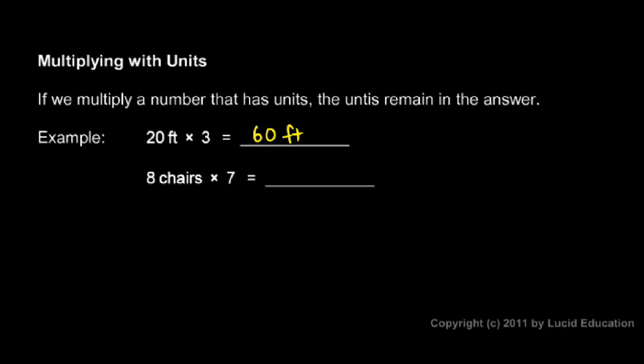When you're multiplying numbers, the units remain. In this case, we have 8 chairs times 7. This might represent a row of 8 chairs, and we have 7 rows. 8 times 7 is 56, and the unit there—chairs—remains. So we have a total of 56 chairs.